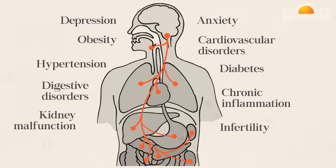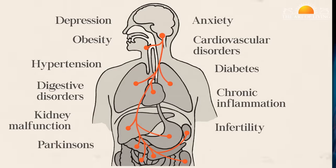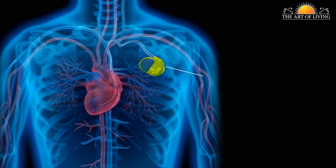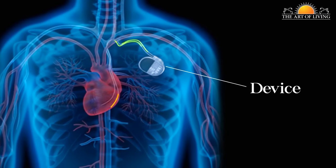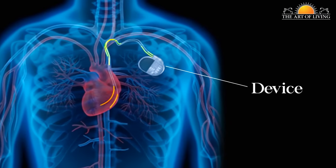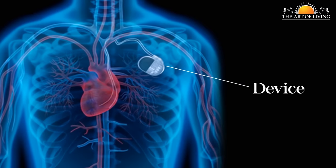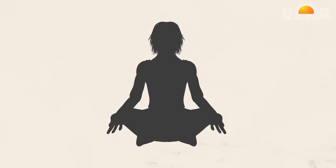Doctors have started stimulating the vagus nerve with electric impulses from a device that increases its activity to help with diseases like depression. However, there are natural ways to stimulate the vagus nerve as well.